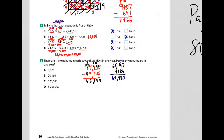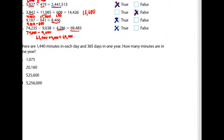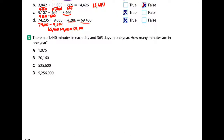Alright, let's try number 3. It says there are one thousand four hundred forty minutes in each day and three hundred sixty-five days in one year. How many minutes are in one year? You cannot add minutes and days and get minutes — this is not an addition problem. This is going to be multiplication. I'm going to do a little bit of estimating here.